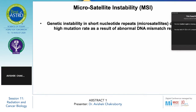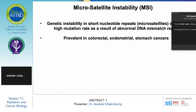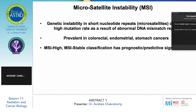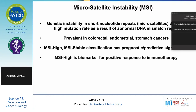Coming directly to the topic: genetic instability in short nucleotide repeats is due to a high mutation rate as a result of abnormal DNA mismatch repair. It is prevalent in colorectal carcinoma, endometrial carcinoma, and stomach carcinoma. The microsatellite instability high and stable classification has prognostic and predictive significance. This microsatellite instability high is a biomarker of positive response to immunotherapy.